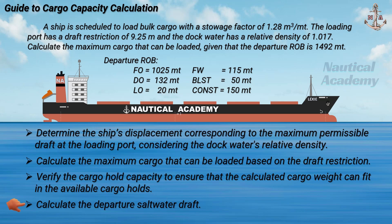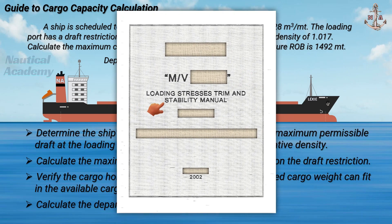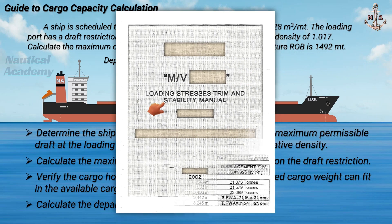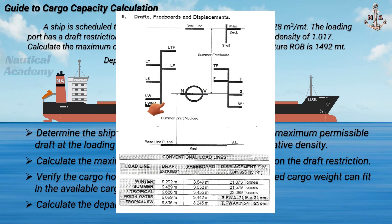Additionally, we'll determine the ship's equivalent draft in saltwater, since she will be departing from the loading port at a draft of 9.25 meters where the dock water relative density is 1.017. Before we proceed with the calculation, let us first refer to the ship's stability manual to check the permissible drafts for different load line zones.